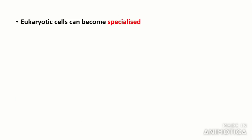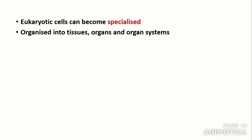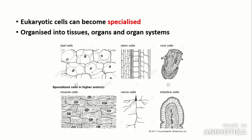The last thing to note is that eukaryotic cells can become specialised cells by the process of differentiation, which we will come on to later in the A2 content when we talk about gene technologies. These specialised cells can then become organised into tissues, organs such as the heart and lungs, and organ systems such as the cardiovascular system and the digestive system. Examples of specialised cells include leaf cells, stem cells (which are actually unspecialised), root cells, muscle cells, nerve cells, and intestine cells.